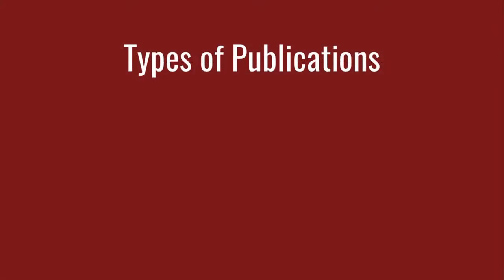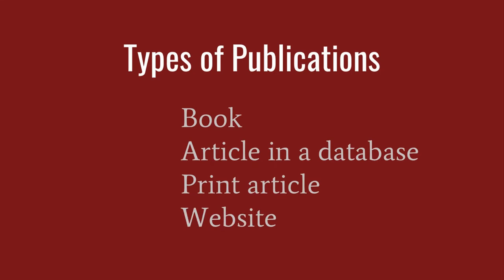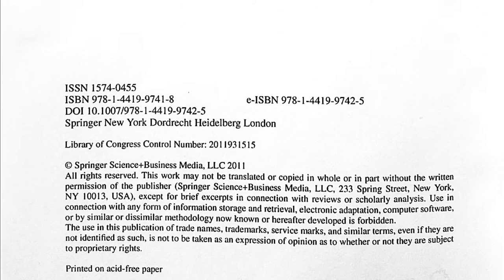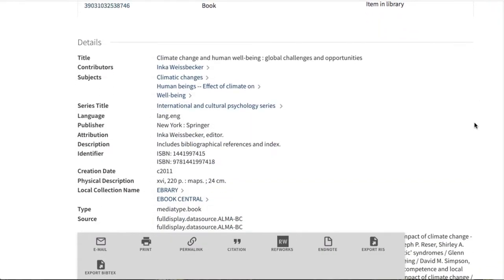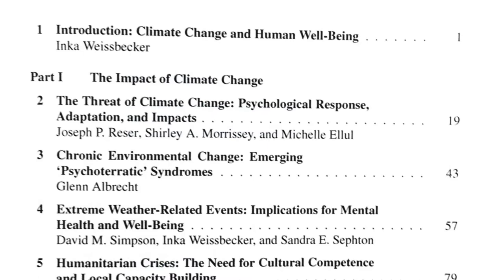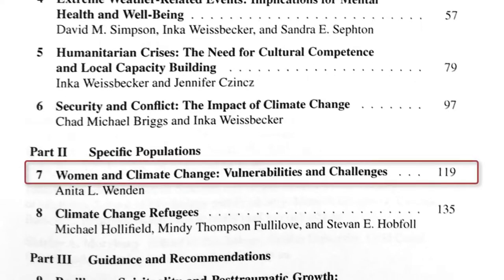Where you find source information depends on the type of publication and its format. Here are a few possible publication types. For a book, the title page and copyright page should provide the information you need. All of this information is also in the library catalog. Sometimes a book is composed of individual chapters by different authors. If this is the case, you'll need the chapter title and author, in addition to the book title and editors.